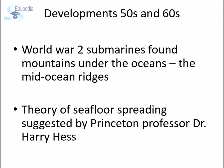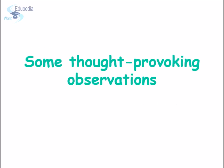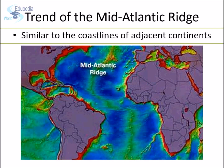Such maps are known as bathymetric maps, and this is what led to the theory of seafloor spreading suggested mainly by Professor Harry Hess. The discoveries were very thought-provoking. It was found that there is a chain of underwater mountains whose shape is very similar to the coastlines of the adjacent continents, as you can see in this picture.